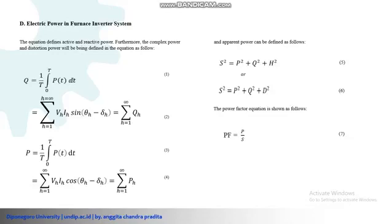First, reactive power is the power required for the formation of the magnetic field, or the power generated by an inductive load. Secondly, active power is the actual power required by the load. Thirdly, apparent power is the quantity obtained as the effective value of voltage and current. Finally, the non-linear power factor is determined as the result of dividing the active power by the apparent power.